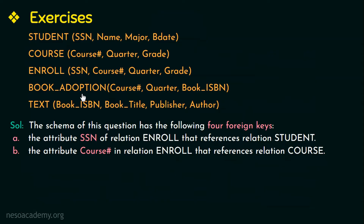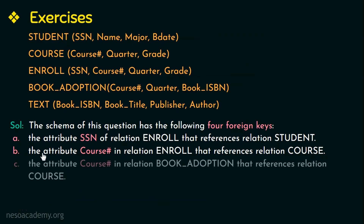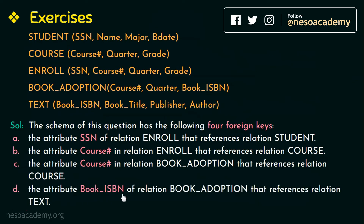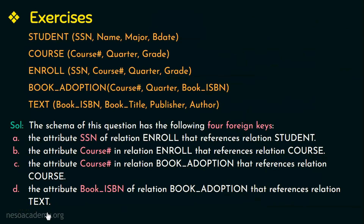In the book adoption relation, its attribute course number refers to the course number of the course relation — that is the third foreign key. The attribute book ISBN in book adoption references the book ISBN of the text relation — that is the fourth foreign key. So in total, these four foreign keys have been identified across the relational schemas.